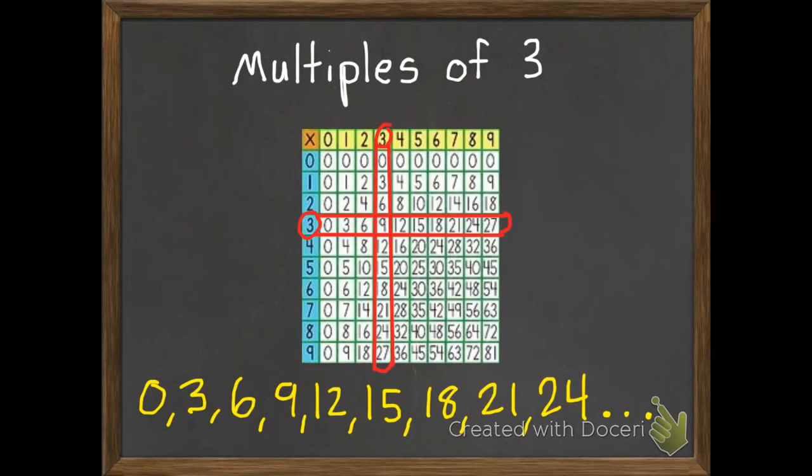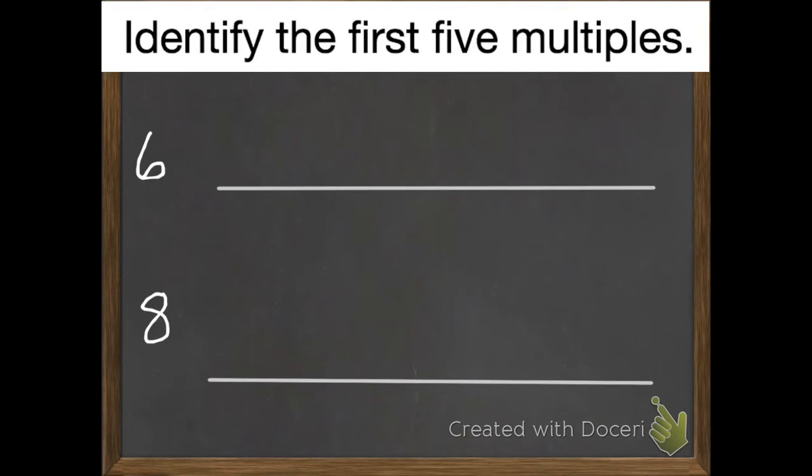So luckily for you, the instructions say to identify the first 5 multiples. We won't make you go forever.